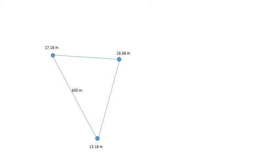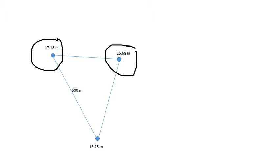This is a short video on using triangulation to calculate the flow direction of groundwater when you have three different well measurements. In this example we've got the high point which is 17.18 metres, the middle head height which is 16.68, and the lowest which is 13.18 metres.